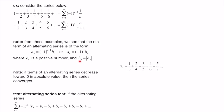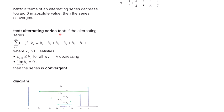b sub n is going to be a positive number, where b sub n is the absolute value of the entire expression a sub n. Then we have: if terms of an alternating series decrease towards 0 in absolute value, then the series converges. That leads us into our alternating series test. If the alternating series sigma of negative 1 to the n minus 1 times b sub n equals b sub 1 minus b sub 2 plus b sub 3 and so on, where b sub n is positive, satisfies two conditions — b sub n+1 is less than or equal to b sub n for all n (meaning terms are decreasing), and the limit as n goes to infinity of b sub n equals 0 — then the series is convergent by the alternating series test.